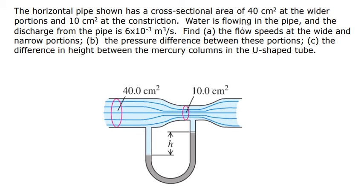Water is flowing in the pipe. And the discharge from the pipe is 6 multiplied with 10 to the power of negative 3 cubic meters per second.